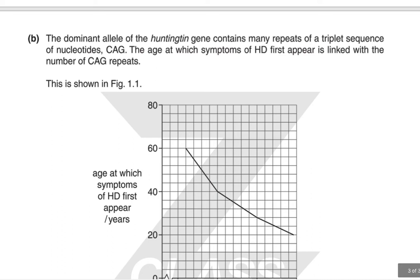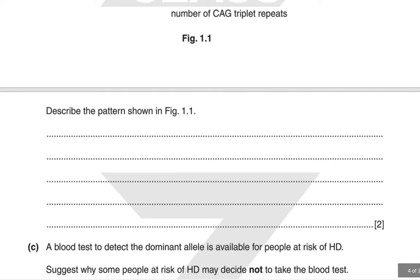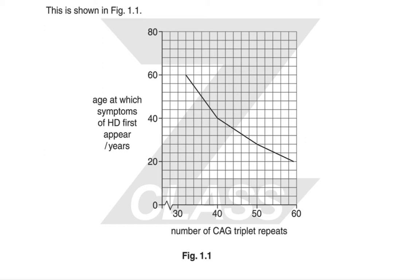The dominant allele of the Huntington gene contains many repeats of a triplet sequence of nucleotides CAG. The age at which symptoms of HD first appear is linked with the number of CAG repeats, as shown in figure 1.1. The question asks to describe the pattern. One obvious thing we can immediately see is that the greater the number of CAG repeats, the earlier the symptoms will appear — so it's inversely proportional. For example, when you get close to around 60 CAG repeats, the age at which symptoms appear is 20, whereas if you have around 30 to 35 repeats, the onset of symptoms is 60 years old.